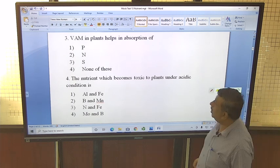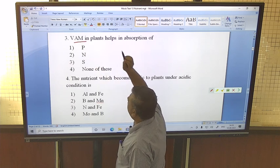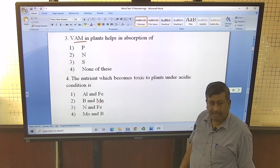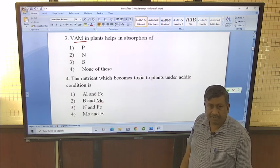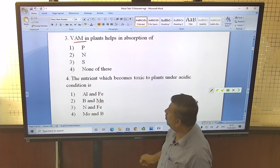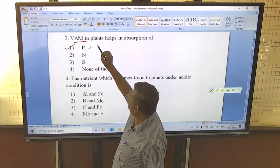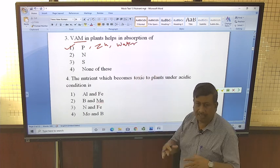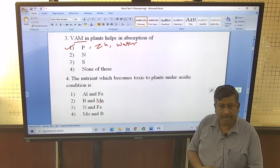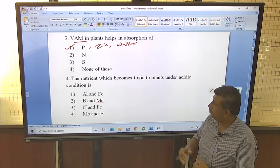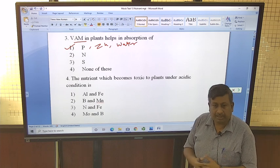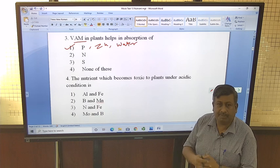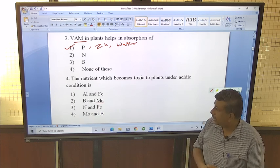VAM in plants help absorption of - VAM is vesicular arbuscular mycorrhiza, it is fungus. It has infection or association with the roots and helps in the absorption of phosphorus. It also helps in absorption of zinc and water. So if roots are infected or inoculated with VAM, then there is more uptake of these nutrients - phosphorus, zinc and particularly water. That's why these plants become drought resistant because they have more capacity to absorb water.